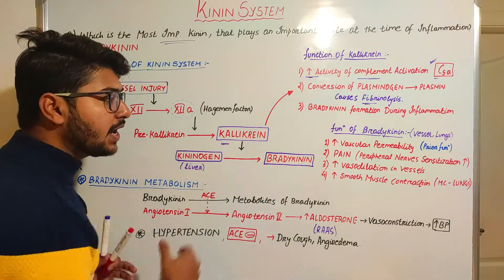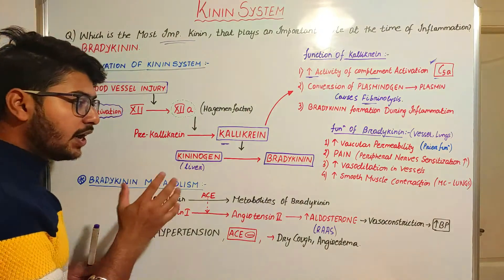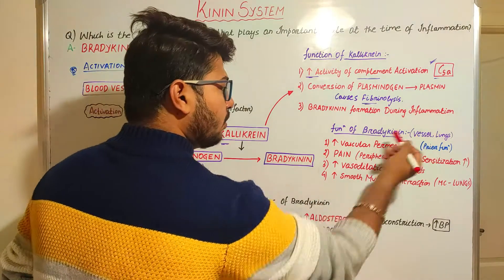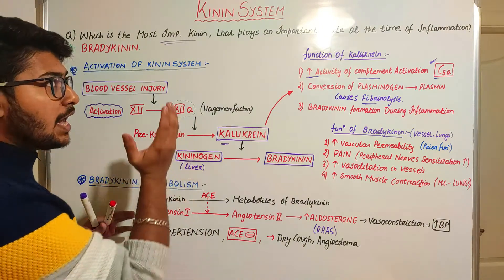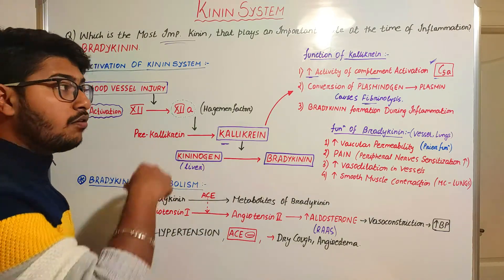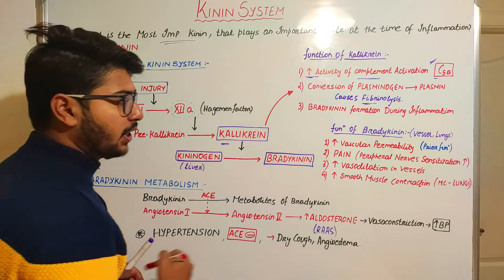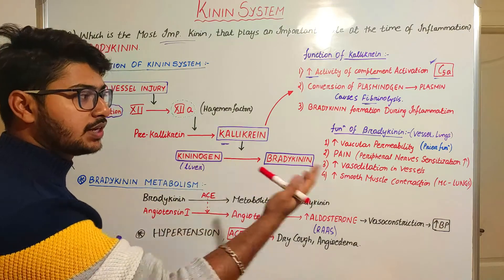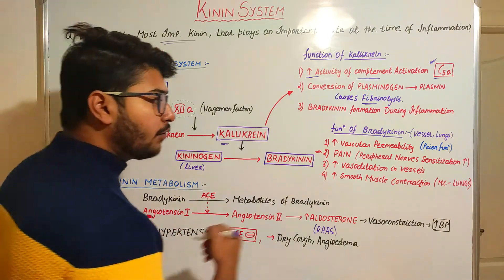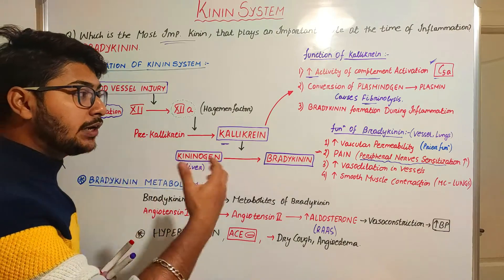Now let's see the functions of bradykinin. During the process of inflammation, when bradykinin is produced, its functions can be divided into two subcategories — effects on blood vessels and effects on lung tissue. In blood vessels, it increases vascular permeability, as all inflammatory mediators increase permeability to compensate for injury. Next, bradykinin causes pain by activating peripheral nervous sensitization — it increases nerve sensitization, leading to the pain sensation.